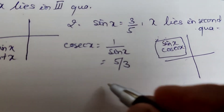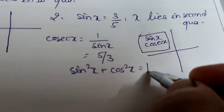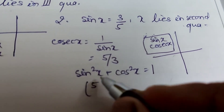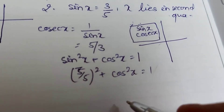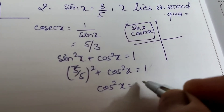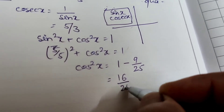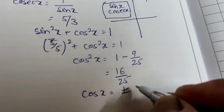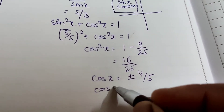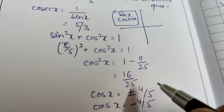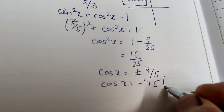Using sin²x + cos²x = 1: (3/5)² + cos²x = 1, so cos²x = 1 - 9/25 = 16/25, giving cos x = ±4/5. Since x lies in the second quadrant, cos x is negative, therefore cos x = -4/5.